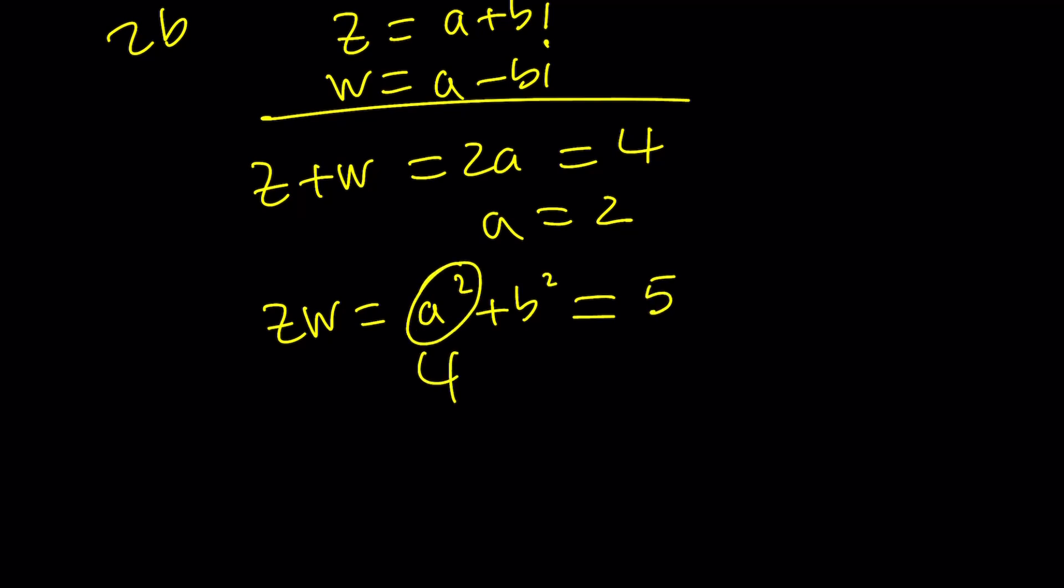But since a is 2, this is 4. So b squared is 1, which means b is equal to 1 or negative 1, which gives you two solutions, 2 plus i or 2 minus i as before. Right?